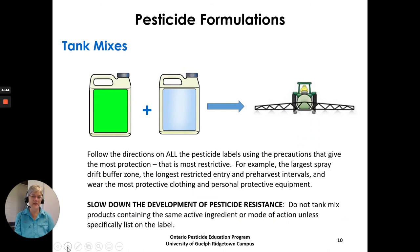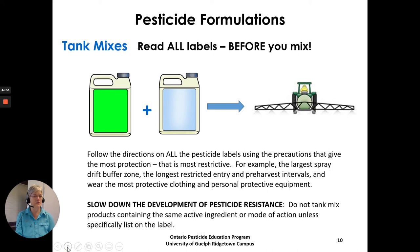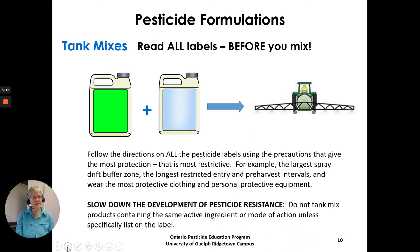Regarding tank mixes — if you want to combine pesticide one and pesticide two, read all labels before you mix. You must follow directions on all pesticide labels using the precautions that give the most protection — the most restrictive. For example, use the largest spray drift buffer zone, the longest restricted entry and pre-harvest intervals, and the most protective clothing and personal protective equipment. Also, to slow the development of pesticide resistance, do not tank mix products containing the same active ingredient or the same mode of action unless the labels specifically state that you should mix those two products.